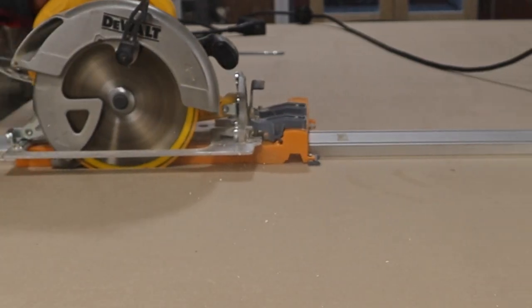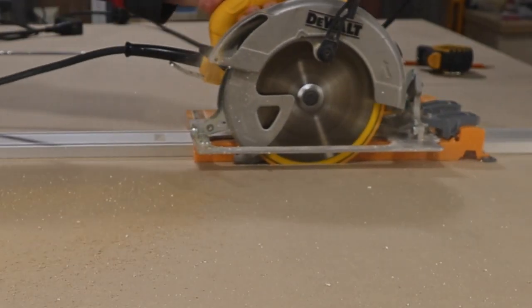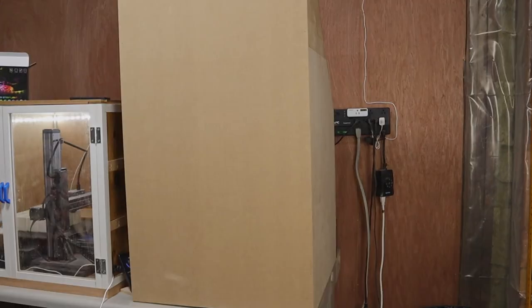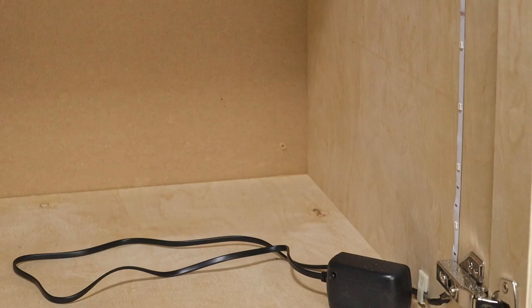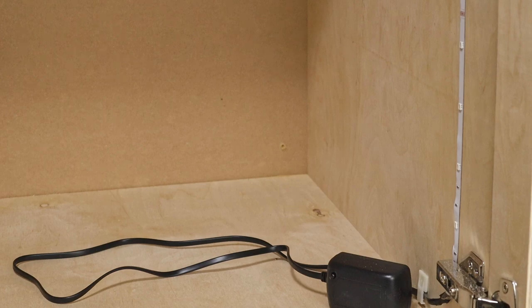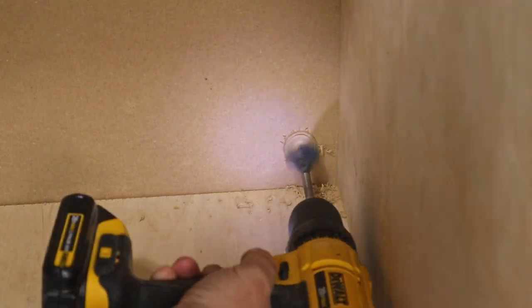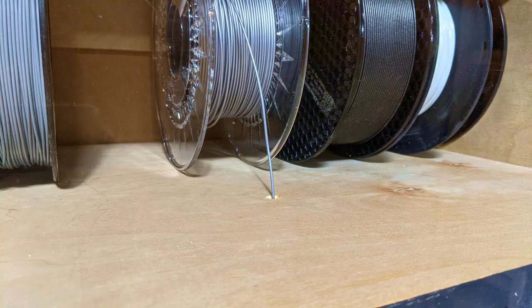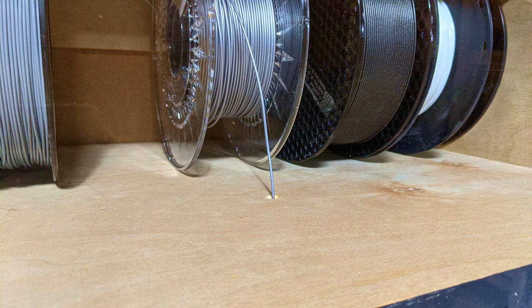For the backing, I'm using this quarter-inch MDF, and after cutting it to size, I just attached it with some brad nails. Now that's mostly done. I added an LED strip to the inside for lighting, and drilled a hole in the back for the cords to go through. I also drilled a hole through the filament box into the enclosure, so that I have somewhere to pass the filament through.